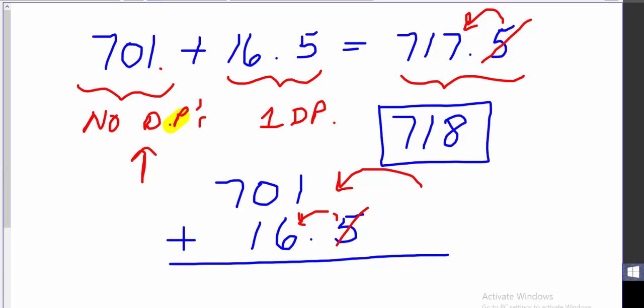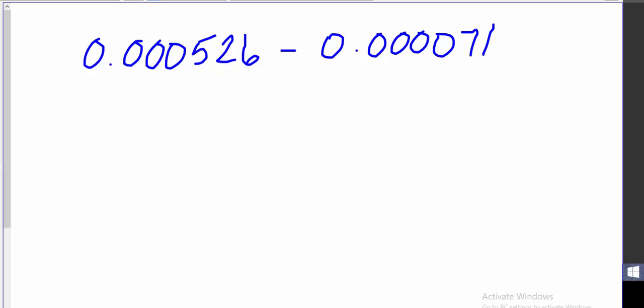In other words, your answer, your final result is really only as precise or as good as what you could actually measure. Let's do a couple other examples of this. Because sometimes they're not all additions, sometimes you have some subtractions. So I've got this one here, 0.000526 subtract 0.00071. And I want to know what is that going to be and how many decimal places. Again, you can go ahead and do the math right away. In my calculator, if I plug that in, it turns out to be 0.000455. And I need to think about decimal places. How many am I allowed?